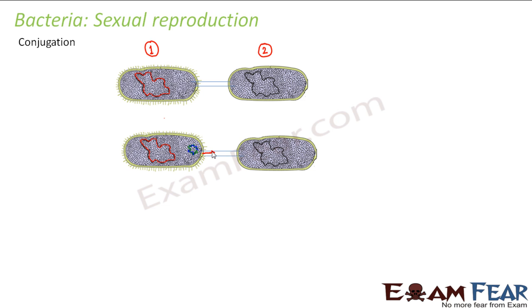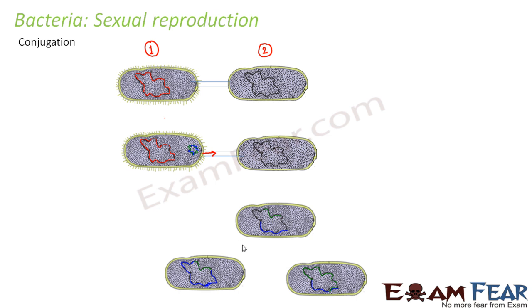Here you see it is passing some part of its chromosome, shown in blue, through the bridge to bacteria two. Bacteria two already had its own chromosome. When the blue colored genetic material arrives in bacteria two, it gets mixed with the already existing black chromosome of bacteria two. So the mixing of the two chromosomes takes place and the chromosome of bacteria two is now altered. Bacteria two will then reproduce again by fission — a copy of this bluish-black chromosome is formed, moves to each corner, a wall forms, and it splits into two daughter organisms.